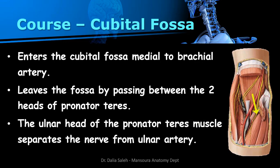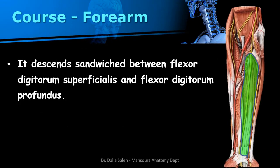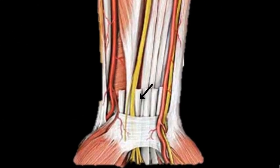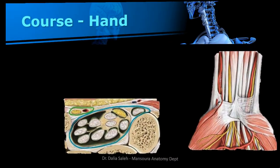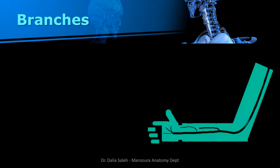It leaves the cubital fossa by passing between the two heads of the pronator teres muscle. The ulnar head of the pronator teres separates the median nerve from the ulnar artery. Inside the forearm, it descends between the flexor digitorum superficialis and the flexor digitorum profundus muscles. Just above the wrist, it emerges between the flexor digitorum superficialis and the flexor carpi radialis tendons. Inside the hand, it passes through the carpal tunnel — the space between the flexor retinaculum and the anterior surface of the carpal bones — passing between the tendons of the fingers.